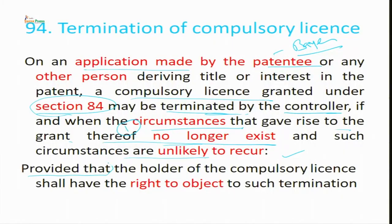It is specifically provided that the holder of a compulsory license shall have a right to object to such termination. This is the conflict between the patentee and the holder of compulsory licensing. The patentee can also file an objection to termination, and the person in whose name the compulsory license is granted can also have a right to file an objection. The controller has to hear both parties and decide whether there should be termination or not.